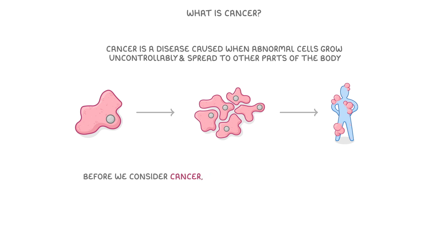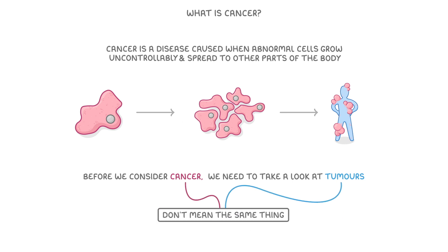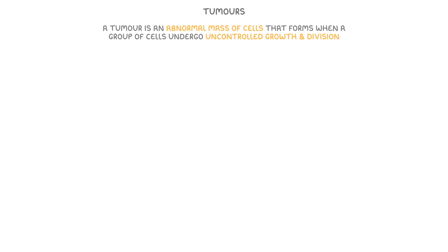Before we consider cancer any further, we need to take a look at tumours. A key thing to understand is that these terms don't mean the same thing. So let's see what tumours are and the different types that can exist. A tumour is an abnormal mass of cells that forms when a group of cells undergo uncontrolled growth and division.